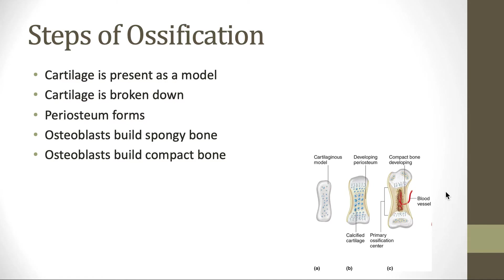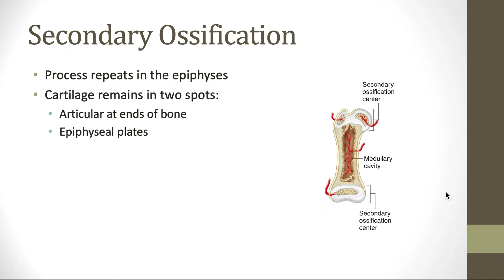When talking about ossification, we start with a cartilage model. The cartilage is then broken down, and a periosteum forms on the outside of the bone. The periosteum is essential for bringing nutrients to the area. Osteoblasts are then going to build spongy bone, and then they're going to build compact bone. This starts in the center of the diaphysis and then moves out towards the ends of the bone. The bone will have a medullary canal with blood vessels inside. Once the diaphysis is ossified, secondary ossification occurs in the epiphyses.